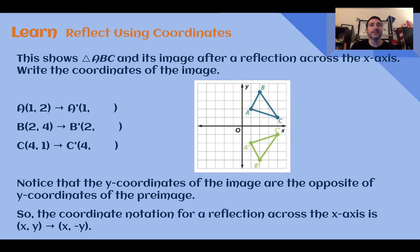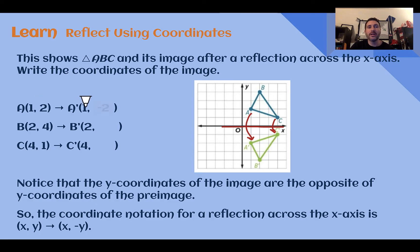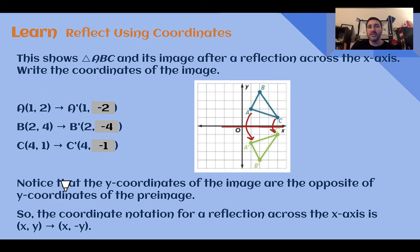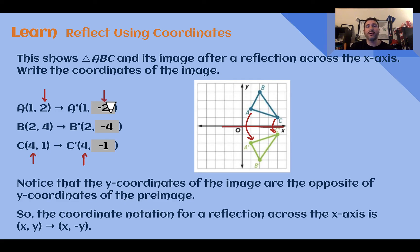Let's learn: Reflect using coordinates. This shows triangle ABC and its image after a reflection across the x-axis. Every point is flipped down over that axis. Let's look at what happened to the coordinates. A was at (1, 2) — A prime is at (1, -2). B was at (2, 4) — B prime is at (2, -4). C was at (4, 1) — C prime is at (4, -1). For reflections, one of the coordinates is going to stay the same and one of them is going to be the opposite. The x-coordinate for each of these stayed the same, while the y-coordinates are the opposites. That is how coordinate notation works for reflections. If it's reflected across the x-axis, the x-coordinate will stay the same and the y will be the opposite.